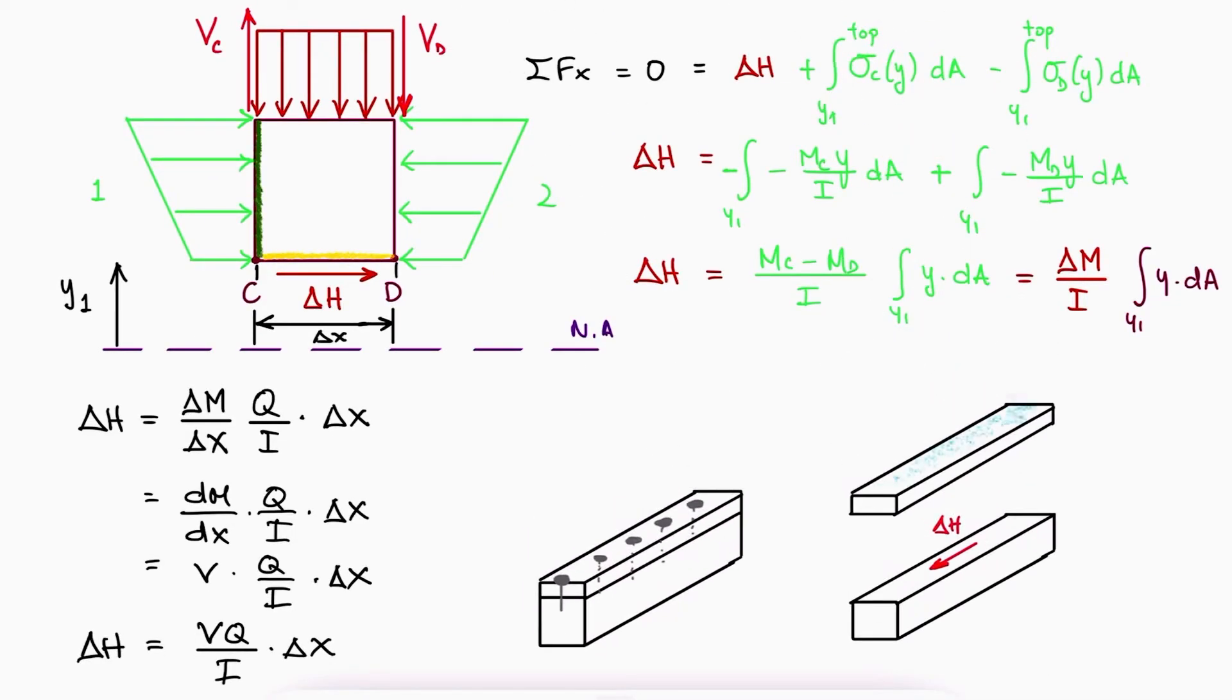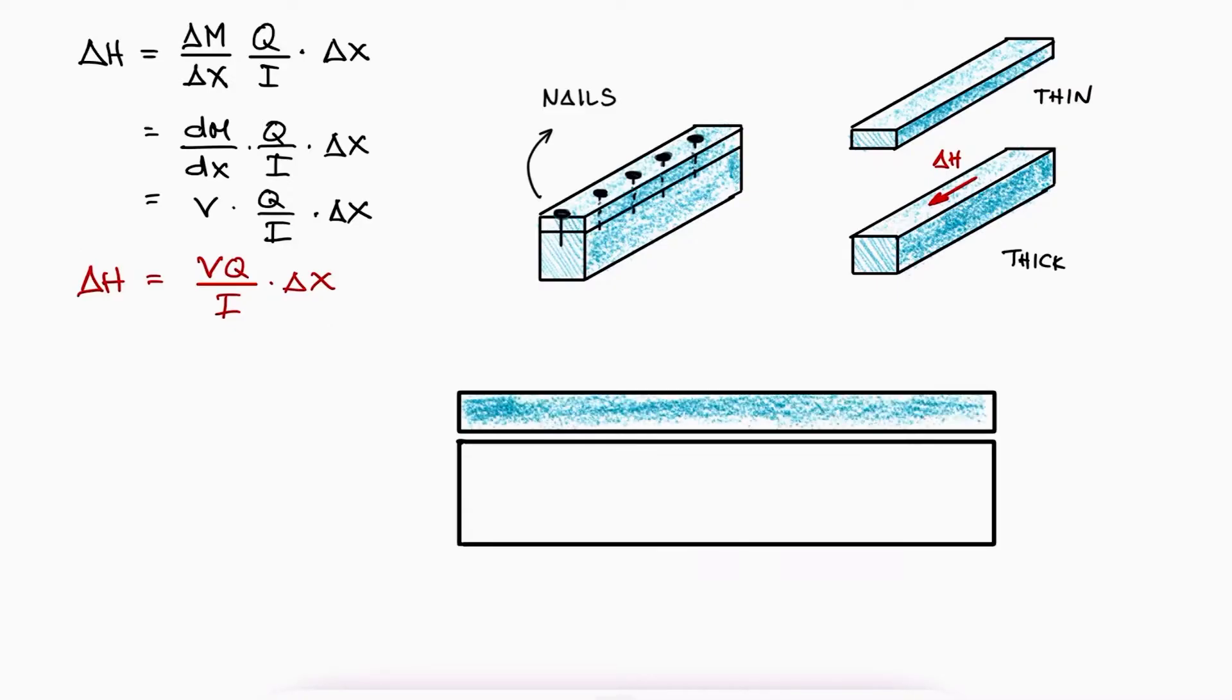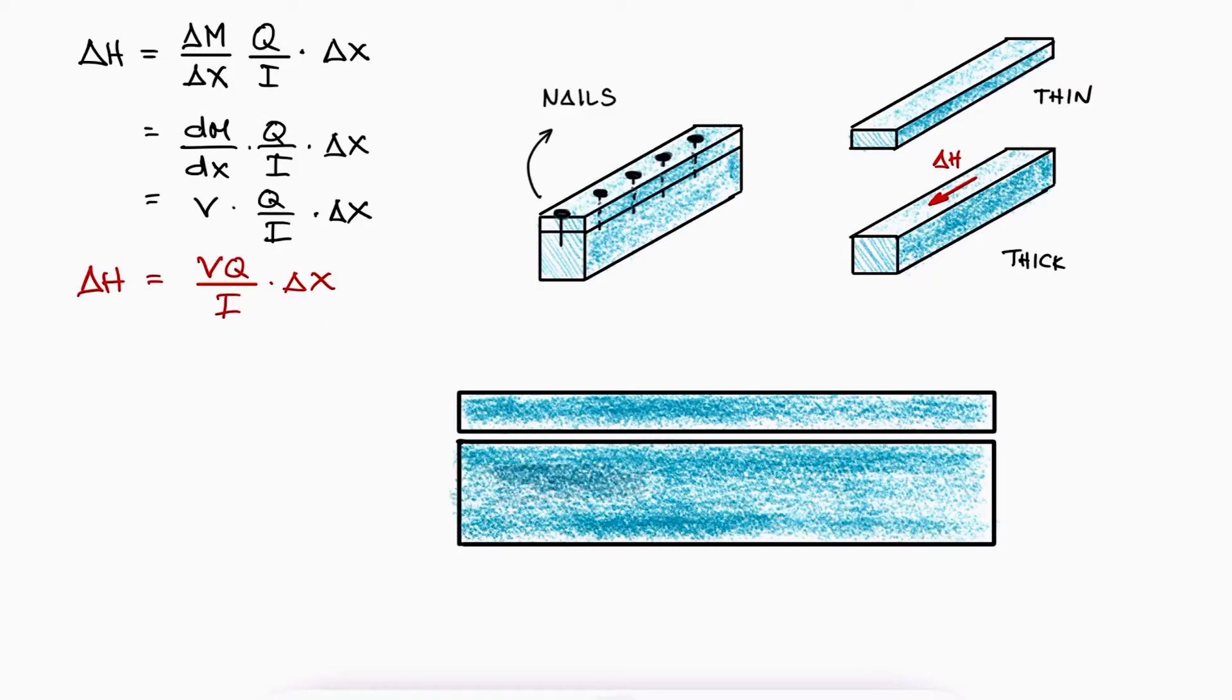Now, if for example this beam is formed by putting two planks of wood together, one thick and one thin, and they are kept together with the help of some nails, we could calculate the force in the plane of contact between the planks of wood by using the delta H equation. Since at that plane between the planks all we see is the nails, the force delta H would be in its entirety affecting the nails.